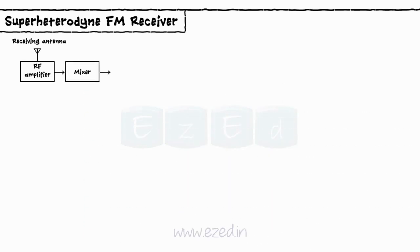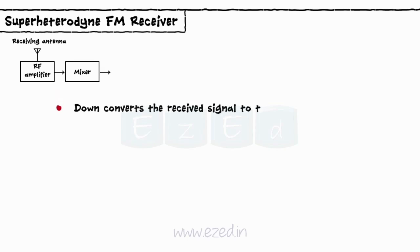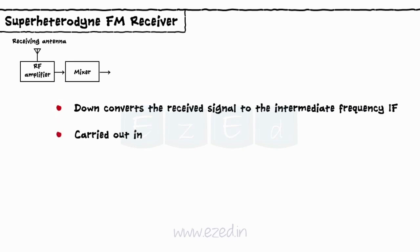Mixer: Similar to AM receivers, the mixer stage in the FM receiver down-converts the received signal to the intermediate frequency (IF). It is carried out in a similar way to the AM receiver.